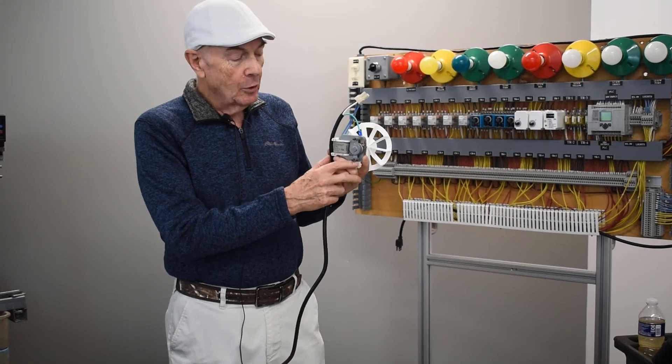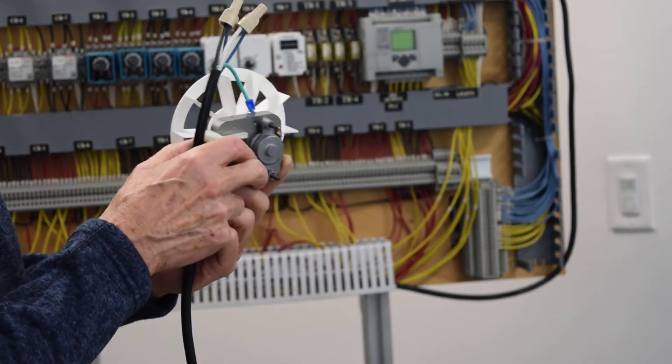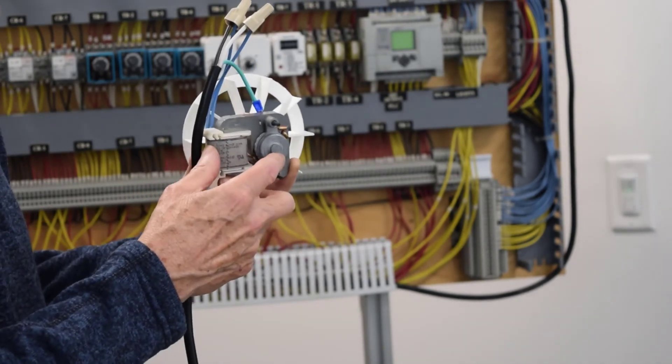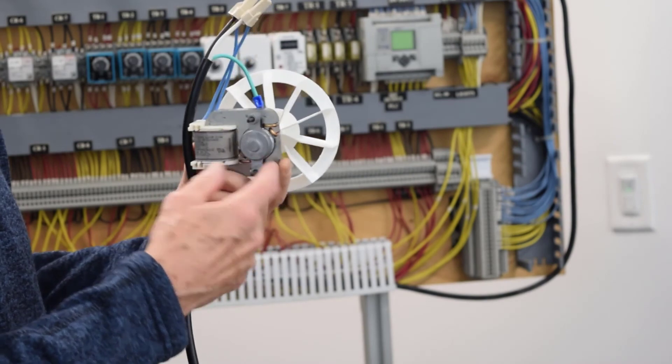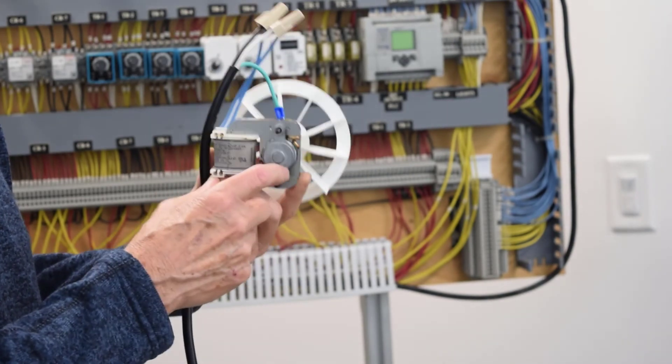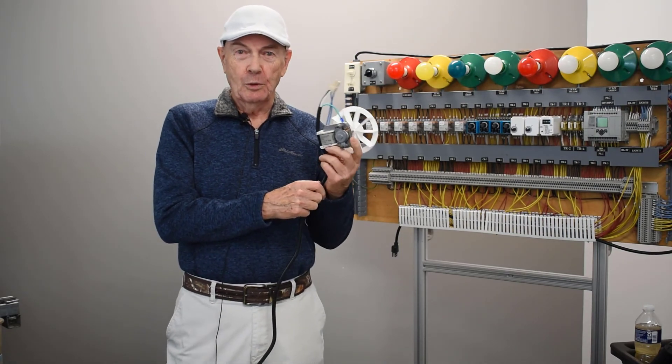Now if we want to reverse this motor, what we've got to do is we got to take the rotor out, turn it around, and put it in the other way. And that's how we reverse the rotation of that motor.